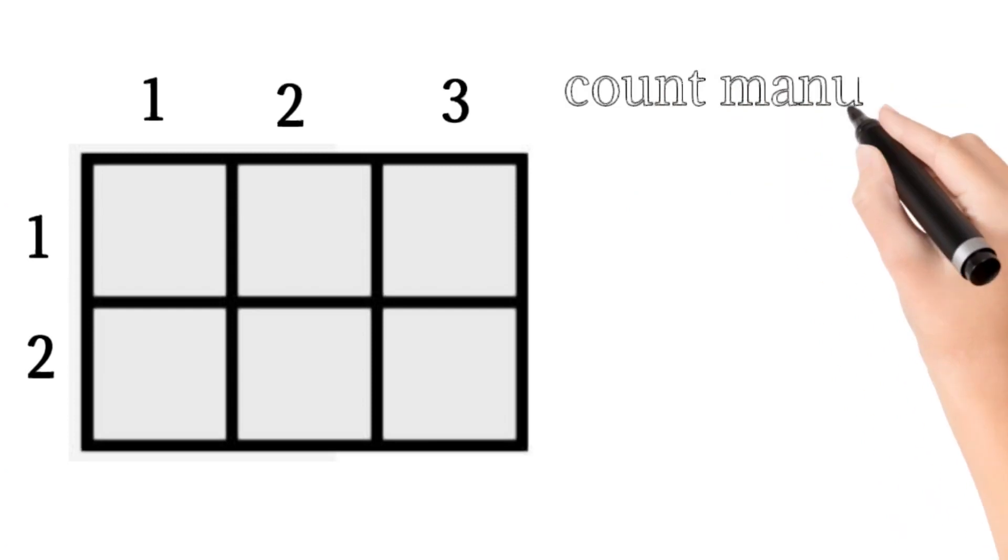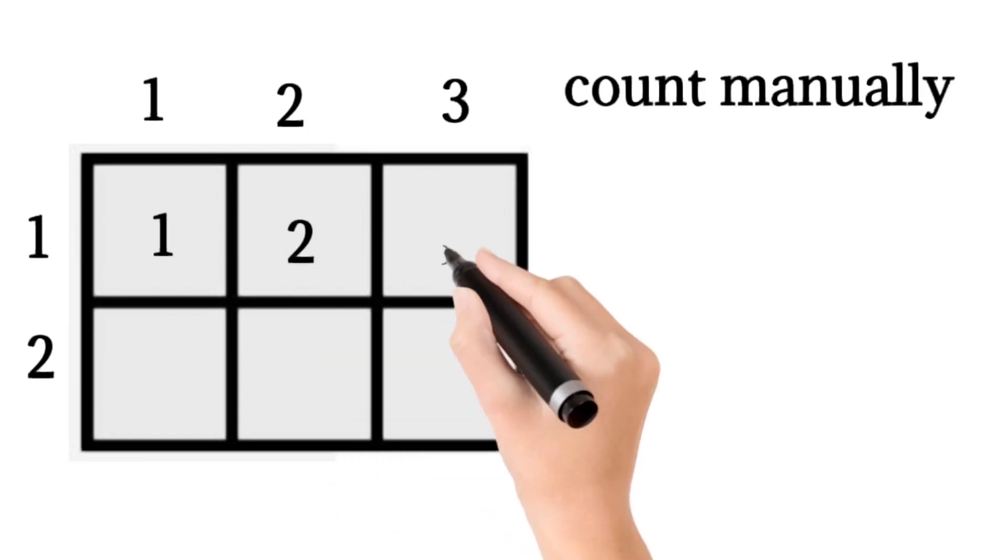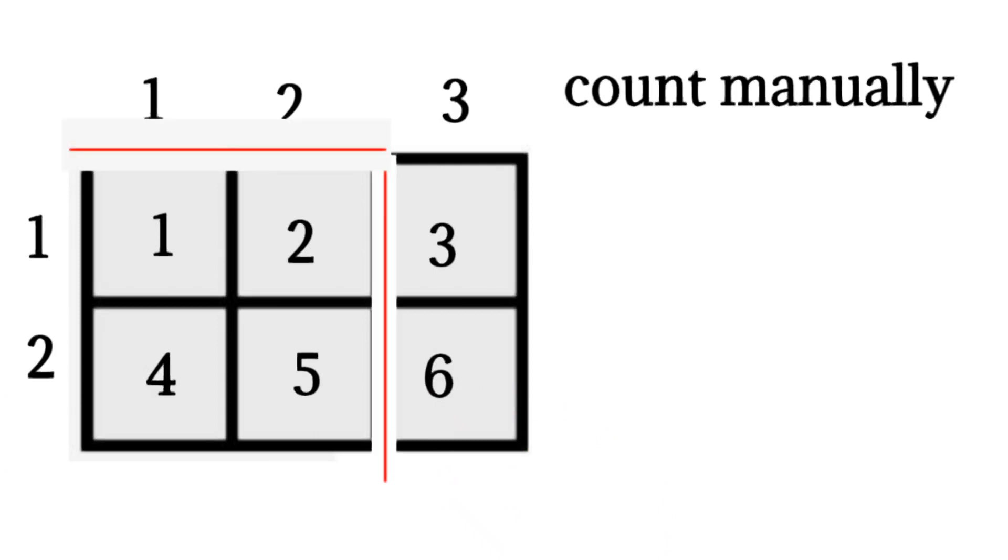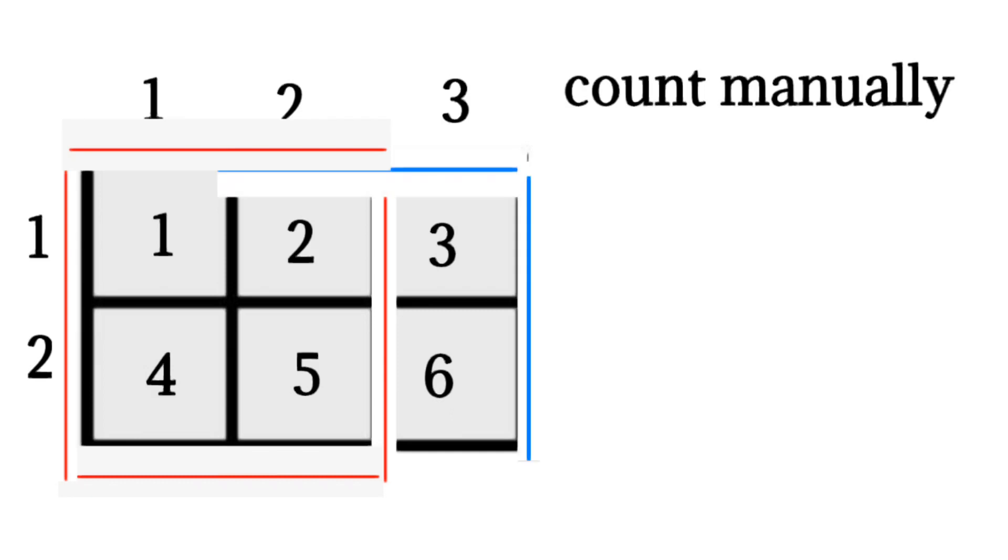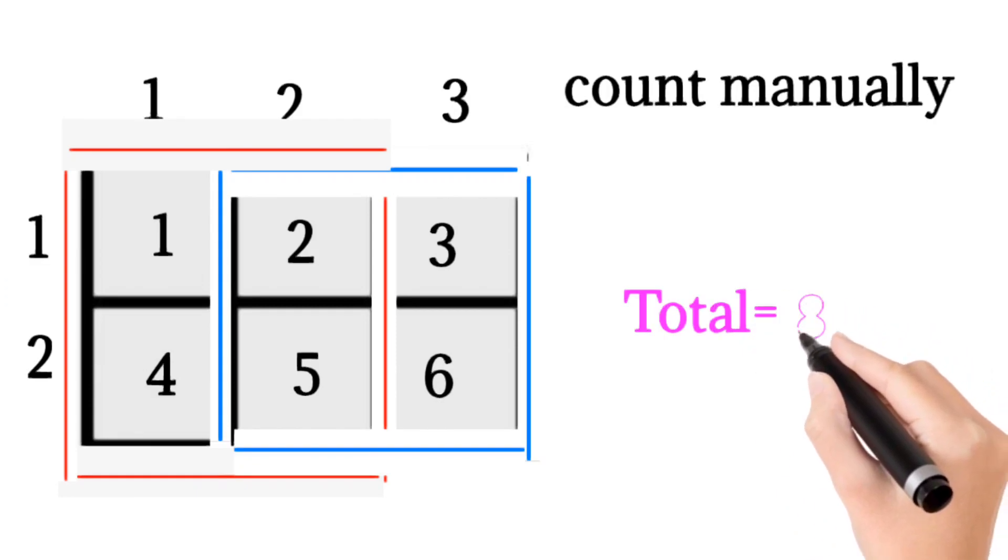So consider this figure which has 2 rows and 3 columns. Now if I count the number of squares manually, this is the first square, second, third, fourth, fifth, and sixth. And this bigger one is the seventh, and one more bigger is the eighth square. So total squares in this figure are 8.